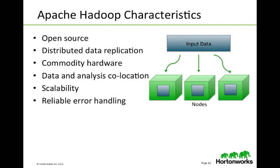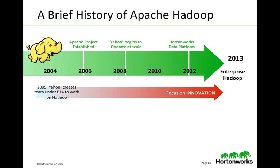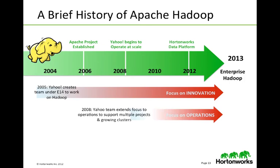It's scalable and has reliable error handling. Apache Hadoop has been around for almost 10 years. In 2005, Yahoo was very dependent on Apache Hadoop and created a team under Eric Bultischweiler — known as E14 — to work on and build innovation into Apache Hadoop. Then in 2008, as their clusters grew, it became imperative to operationalize the management of those clusters, so the team started focusing on the operational tasks surrounding Hadoop.